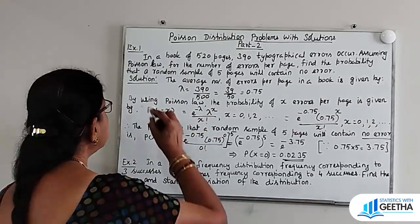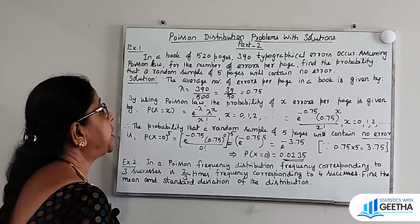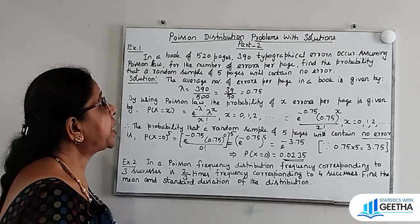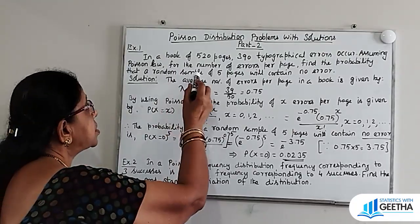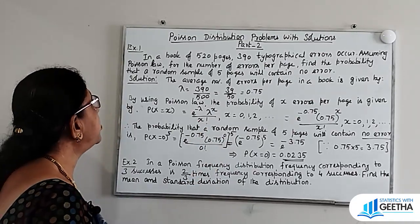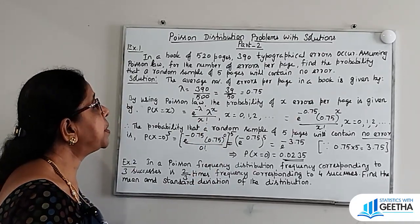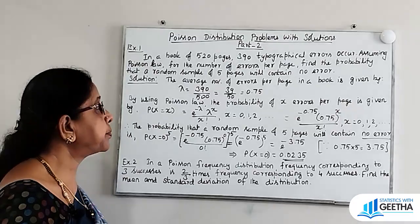Exercise number 1. In a book of 520 pages, 390 typographical errors occur. Assuming Poisson law for the number of errors per page, find the probability that a random sample of 5 pages will contain no error.